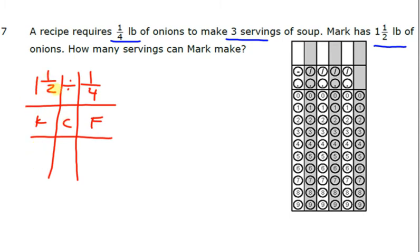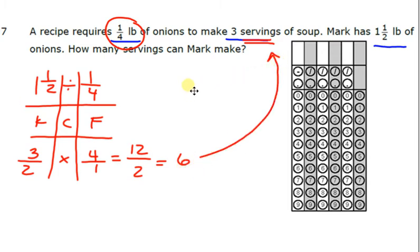So make this into an improper fraction. 2 times 1 is 2, plus 1 is 3. Change the multiplication and flip to 4 over 1. 3 times 4 is 12. 2 times 1 is 2. And when I simplify that, I get 6. Now, if one-fourth of a pound makes three servings, how many servings can he make with one-and-a-half pounds? You have to take this 6 and multiply it times 3. And then so 6 times 3 equals 18. So 18 is your final answer.